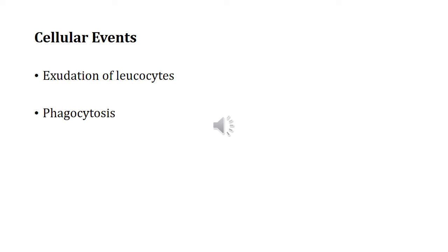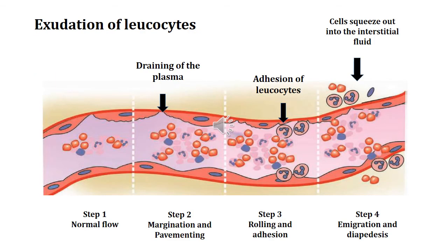So far we have learnt about the vascular events. Let us now understand the cellular events. The cellular events in the mechanism of inflammation include: first, exudation of leukocytes, and second, phagocytosis. Let us now understand the exudation of leukocytes in greater detail.